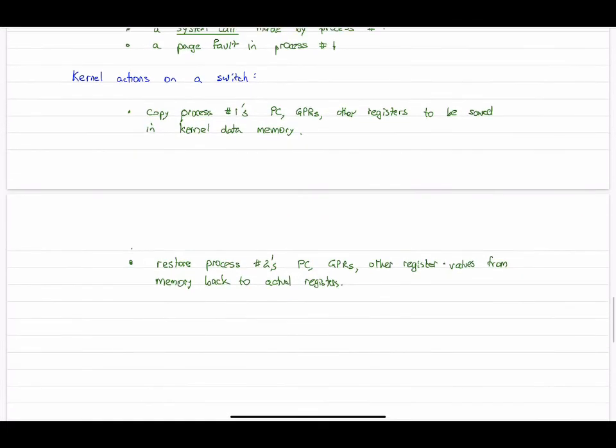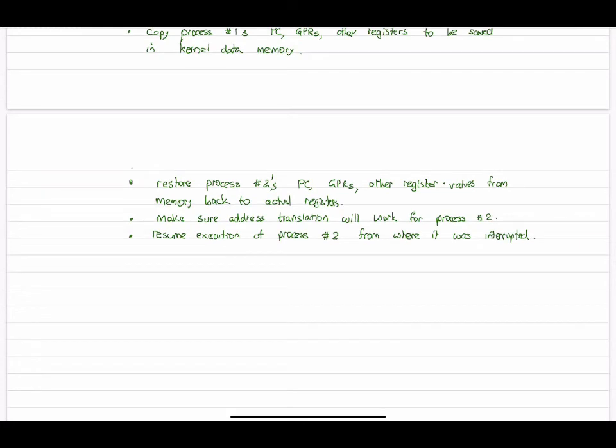The other thing that needs to be done is to take care of address translations. Process number two will have a completely different set of address translations. There are a couple of ways to do this, as we'll see in a moment. Finally, once all that's set up, we're ready to resume execution of process number two. It will take off from the value in the program counter that was last saved, the point at which it was last interrupted.